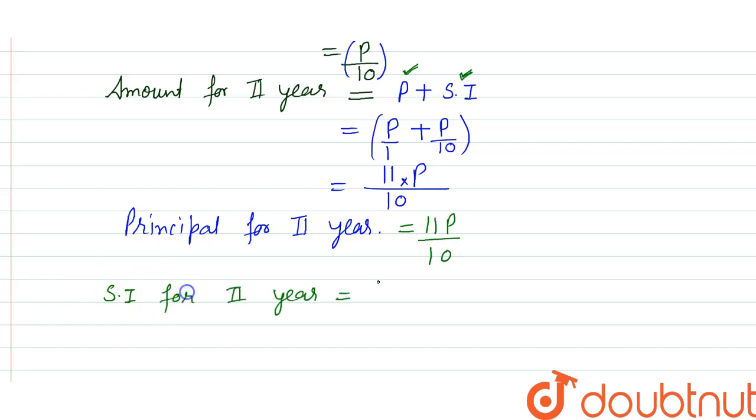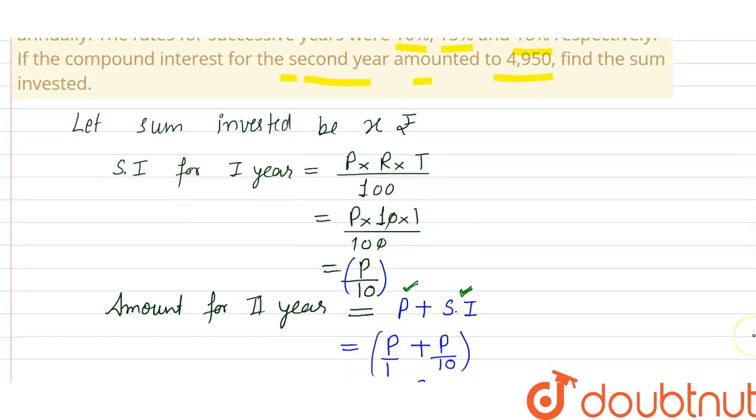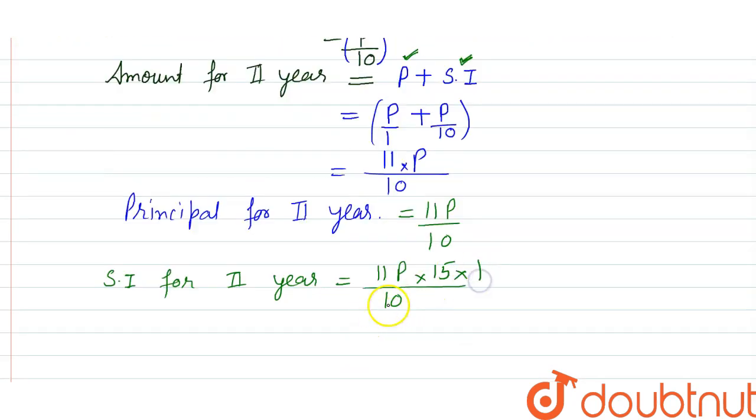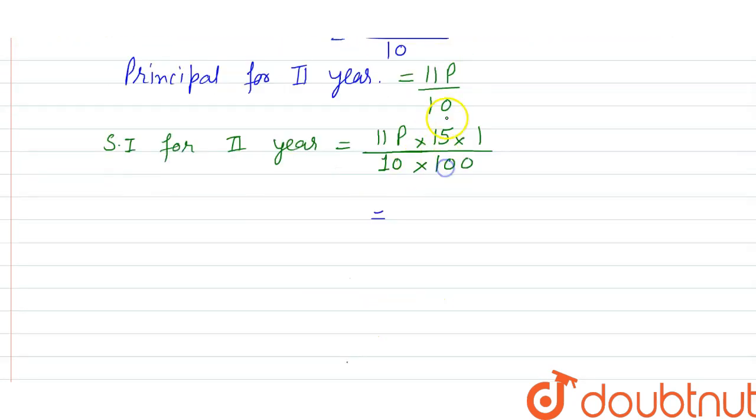For second year, again use the same formula. This is P for the second year, rate for second year is 15%, and time duration is one year upon 100. Now simplify it: 5 × 3 is 15 and 5 × 2 is 10, so this is 33P/200. This is interest for the second year.